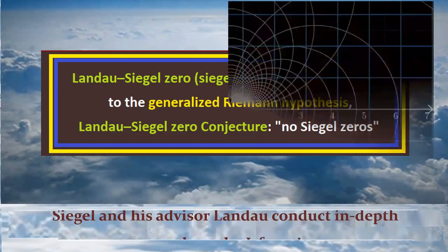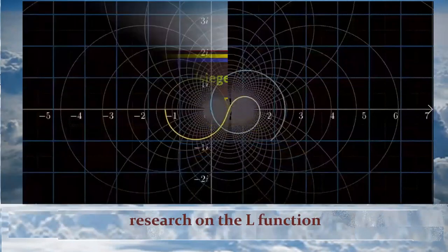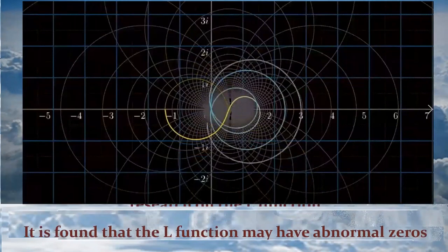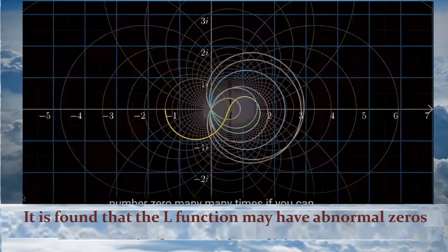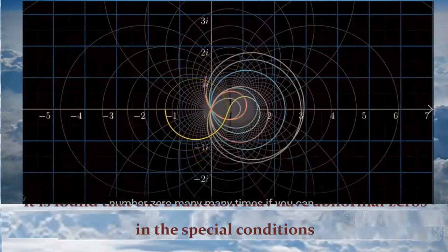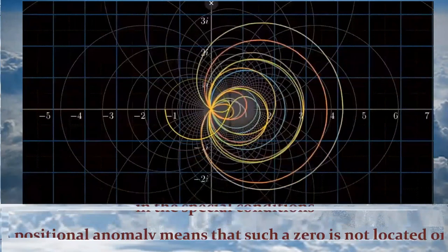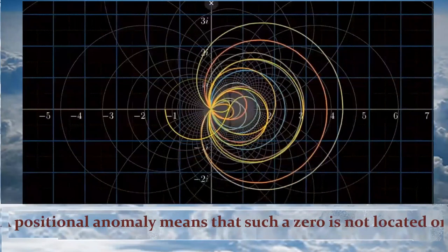Siegel and his advisor Landau conduct in-depth research on the L function. It is found that the L function may have abnormal zeros in special conditions. A positional anomaly means that such a zero is not located on the real part one-half line but is very close to 1.